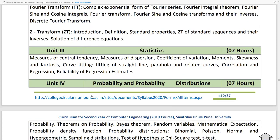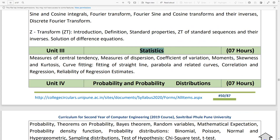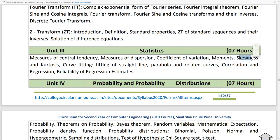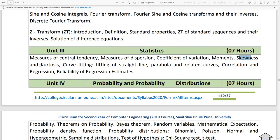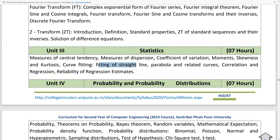Unit 3 is Statistics. There is measures of central tendency, measures of dispersion, coefficient of variation, moments, skewness and kurtosis, then curve fitting, fitting of straight line, parabola and related curves, correlation, and lastly reliability of regression estimates.